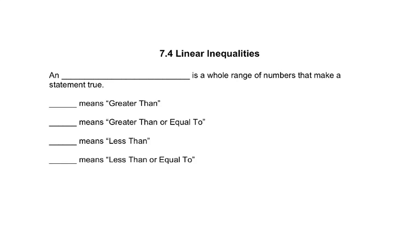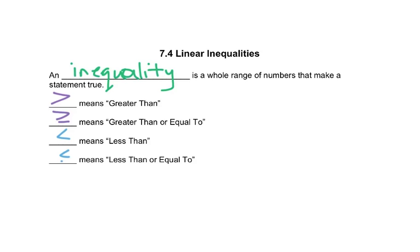In 7.4, we'll look at inequalities. An inequality is a whole range of numbers that make the statement true. That symbol means greater than, and if we put a line underneath it, it means greater than or equal to. This means less than, and if we put a line underneath it, it means less than or equal to.